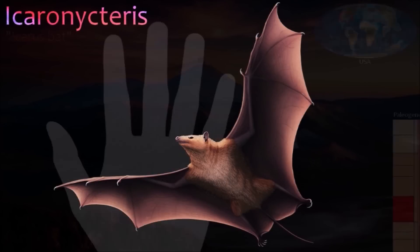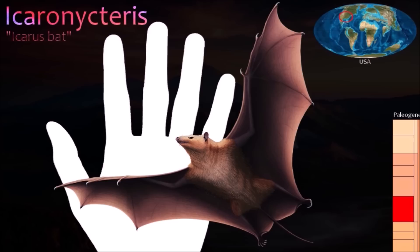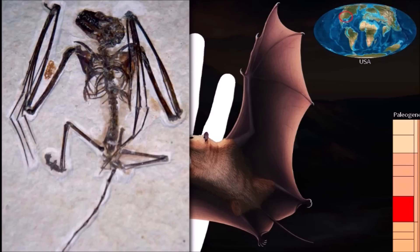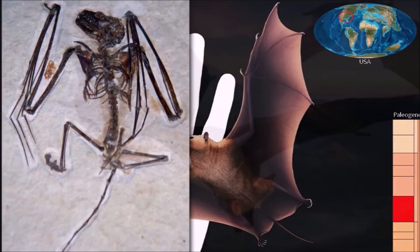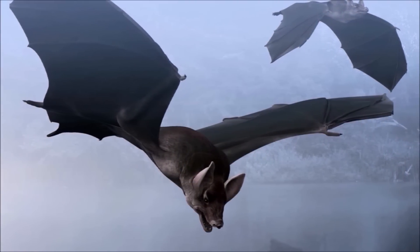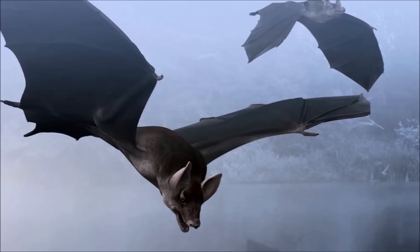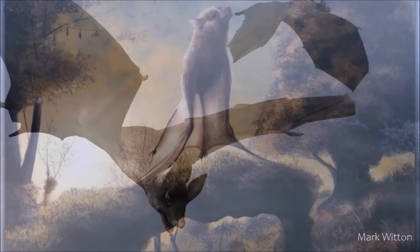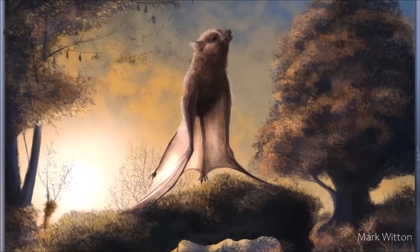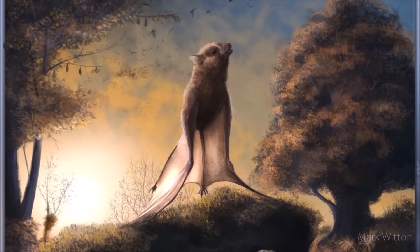Icaronycteris is one of the earliest types of bats, known from a complete skeleton and a few other specimens from the middle Eocene shales of Wyoming's Green River Formation. Like other insect-eating bats, it was small and a skillful flyer. It may have used an echolocation system to catch prey, but it was much more primitive than any living bat. It had a long tail that was not connected to the hind legs, and its first finger bore a claw and was not fused to the wing membrane as in modern bats. An even more primitive bat, Onychonycteris, found in the same deposits, lacks the inner ear features of modern bats indicative of echolocation.